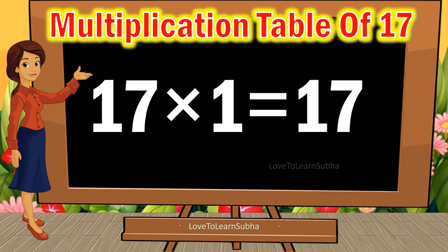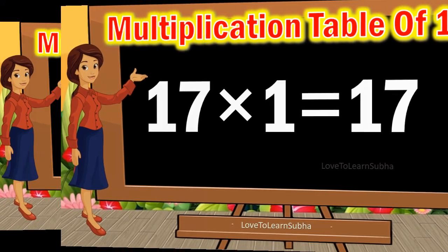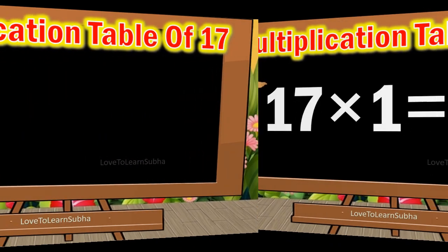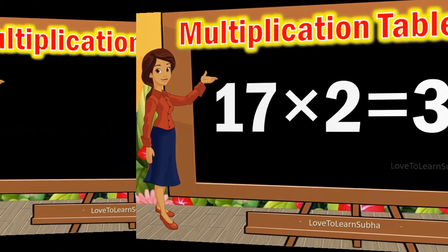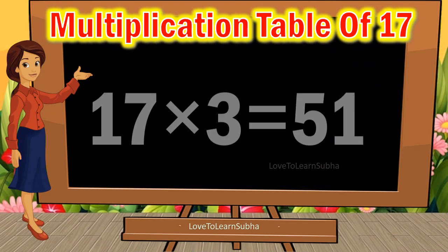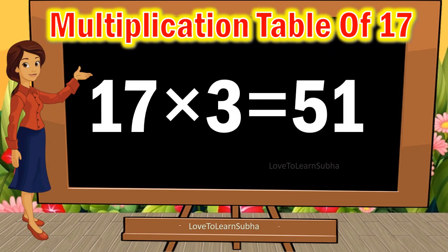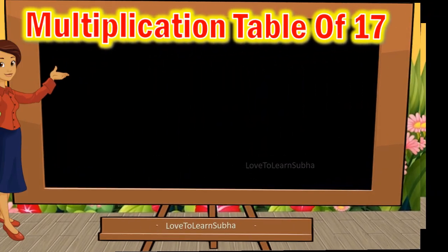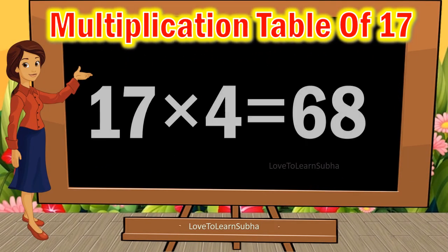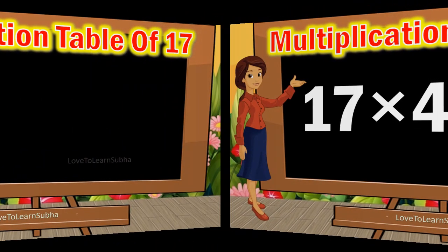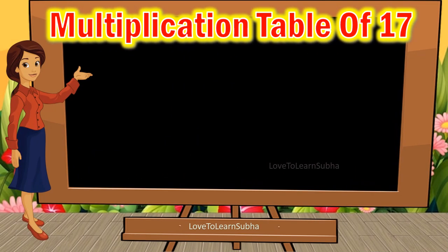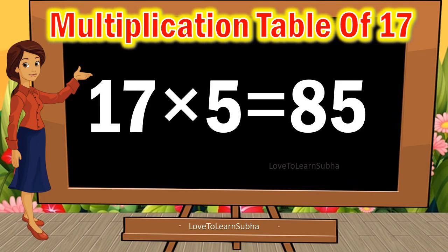17 ones are 17, 17 twos are 34, 17 threes are 51, 17 fours are 68, 17 fives are 85,